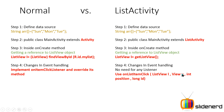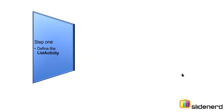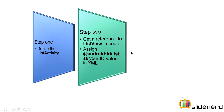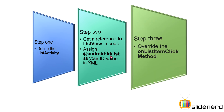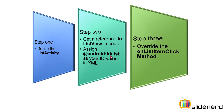Let's look at the detailed steps. Step one: define the ListActivity. Step two: get a reference to the list view in code, and assign android:id/list as the ID value inside your XML for your list view — this is how your ListActivity will find the list view and give it back to Java code when someone calls getListView(). Step three: override the onListItemClick() method.